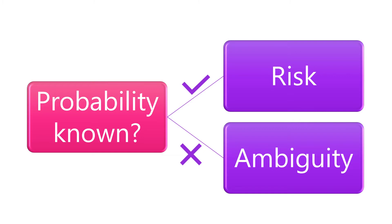A related but different term is risk. Risk means that the probability of outcomes is known. If the probability of winning a lottery is 1 in 10 million, then buying a lottery ticket is risky. Since an absolutely objective probability in real life is quite rare, you make ambiguous decisions more often than risky decisions.